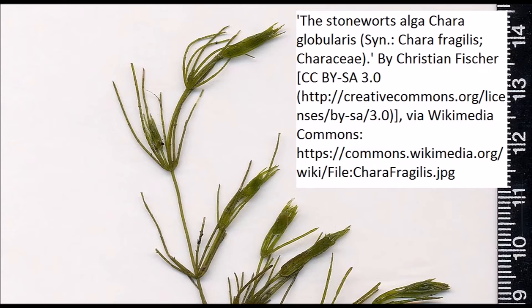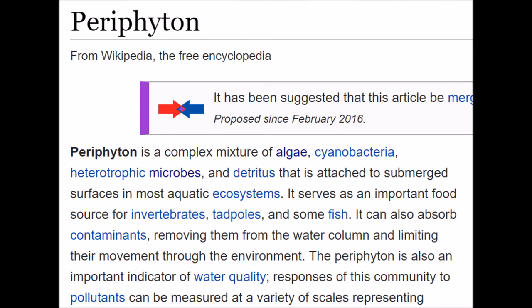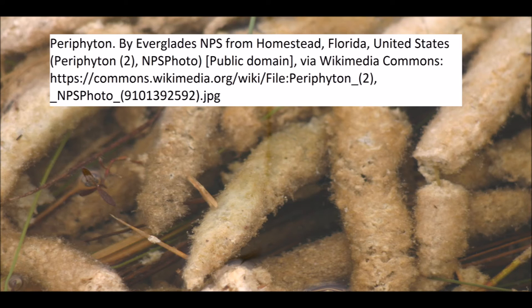On the Chara fragilis was periphyton. According to Wikipedia, periphyton is a complex mixture of algae, cyanobacteria, heterotrophic microbes, and detritus that is attached to submerged surfaces in most aquatic ecosystems. It serves as an important food source for invertebrates, tadpoles, and some fish.